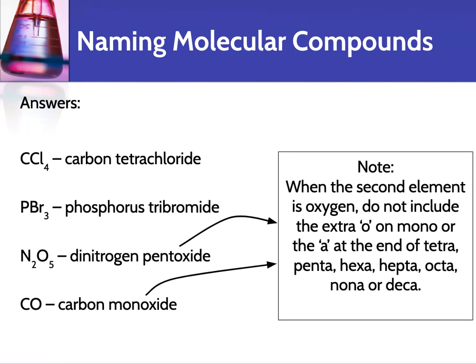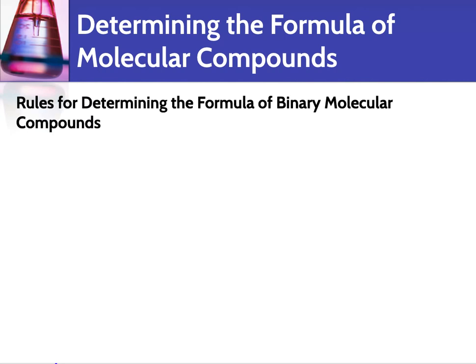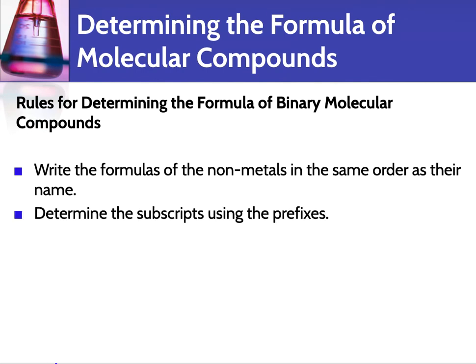Now, going the other way — how do we determine the formula when we're given the name? You figure out what the non-metals are from the name and write them down in the same order as their name. Then you determine how many of each atom there is using the prefixes, and you add those as subscripts.